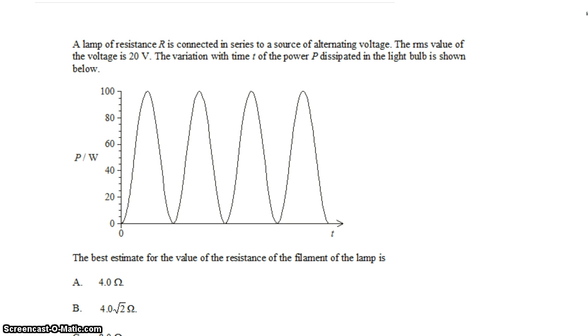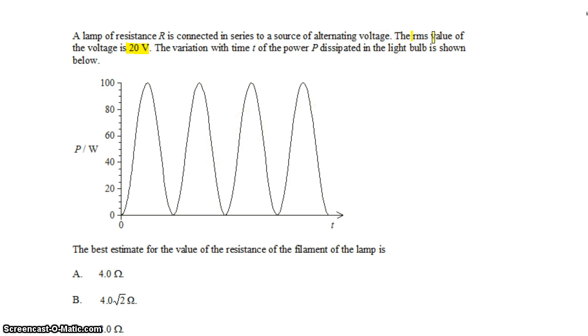We have a lamp with a resistance R connected in series to a source of alternating voltage with a value of 20 volts. That's an RMS value.